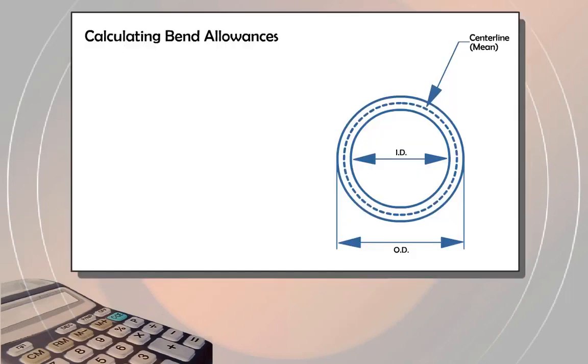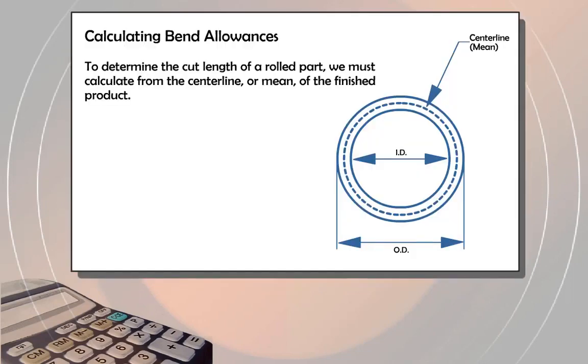Calculating Bend Allowances. To determine the cut length of a rolled part, we must calculate from the centerline, or mean, of the finished product.